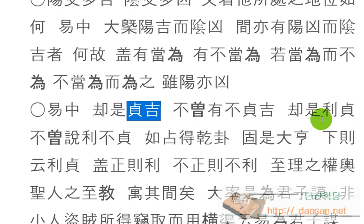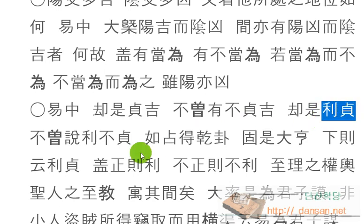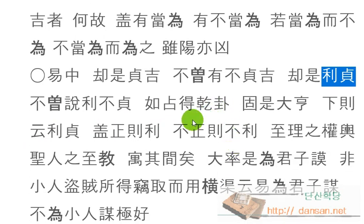불중설 이 부정, 일찍이 바르지 못한 것 곧지 못한 것이 이롭지 않다는 말이니. 여점들 곧게, 마치 곧게를 점으로 얻었다면, 곧게 맨 앞에는 원형이정이라고 나왔잖아요. 그렇다면 곧이 대형이에요. 원자는 으뜸 원자니까, 원형 할 때 원형이라는 말은 주자는 크게 형통하다고 했거든요.